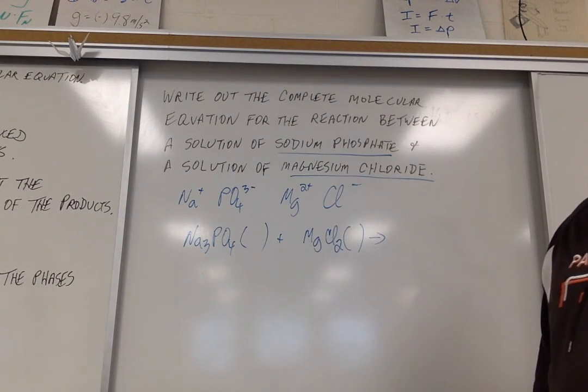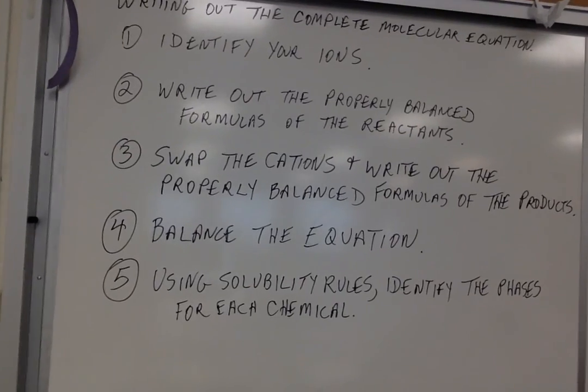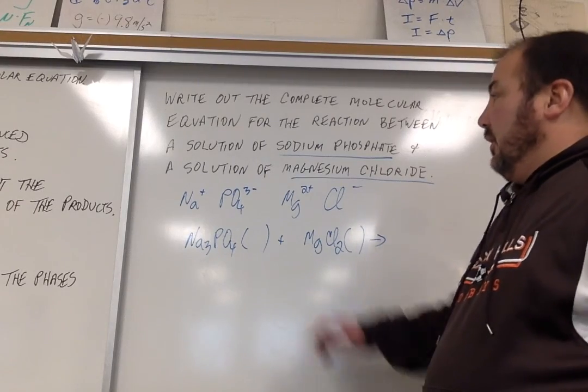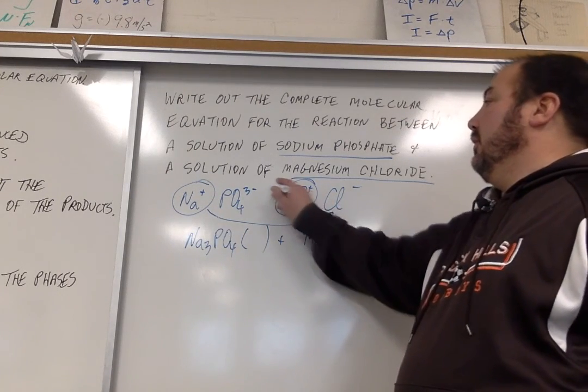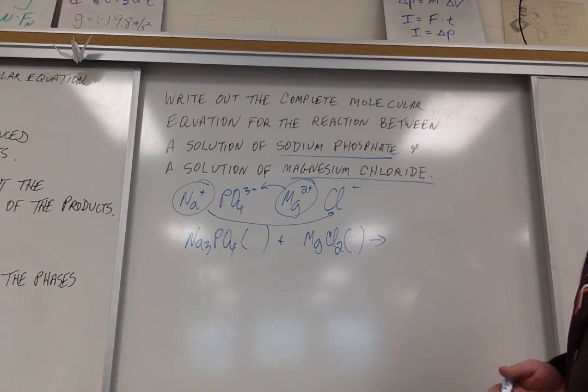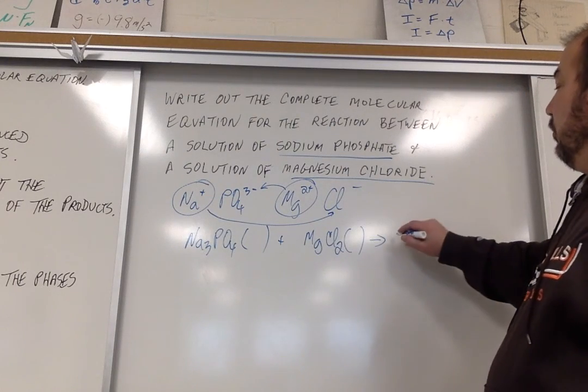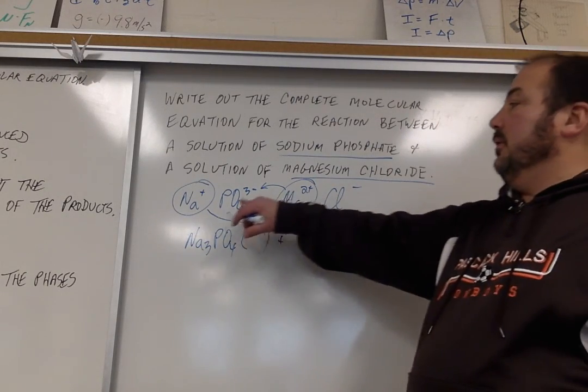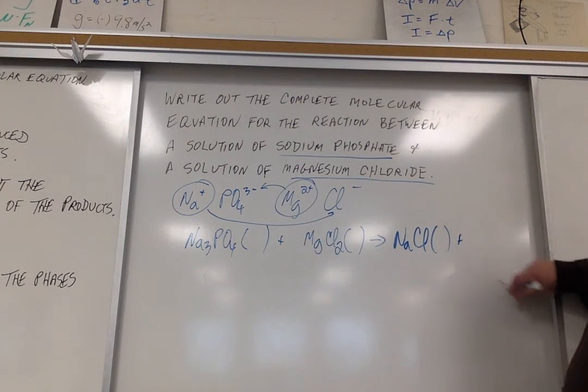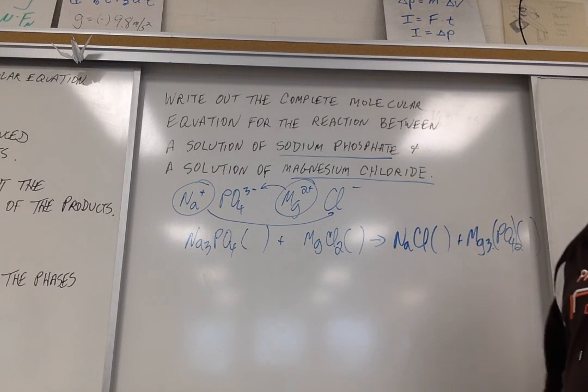Now what we want to do is swap the cations. We're going to swap the cations and write out the properly balanced formulas of the products. The cations are sodium and magnesium. Sodium was with phosphate, but now it's going to go to chloride. Magnesium was with chloride, now it's going to go to phosphate. Which one you pick first doesn't really matter. Of course, every time we write a compound, we always put the positive before negative. So I'm going to take the sodium and put it with chloride. Sodium is plus one, chloride is minus one. So one of my products is NaCl, sodium chloride. And the other product is magnesium phosphate. Magnesium is plus two, phosphate is minus three. So now I have to get a common multiple. And so I get Mg3(PO4)2.